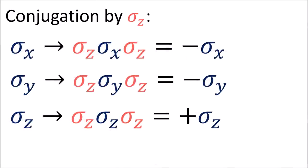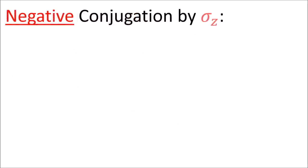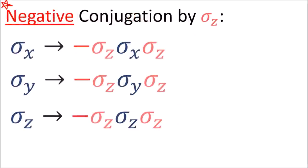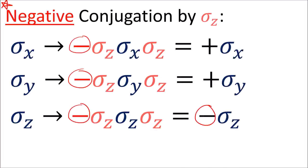So if we want to reflect a vector along the z-axis, we need to flip the sign of the z-component. But here we've done the exact opposite—we've flipped every component's sign except the z-component. But this is easy to fix: we just put a negative sign in front of our conjugation. So negative conjugation by sigma z will flip the sign of the z-component and leave all the other components alone.